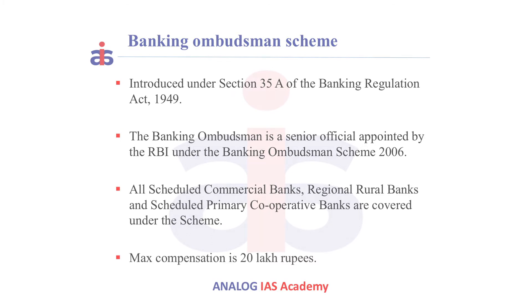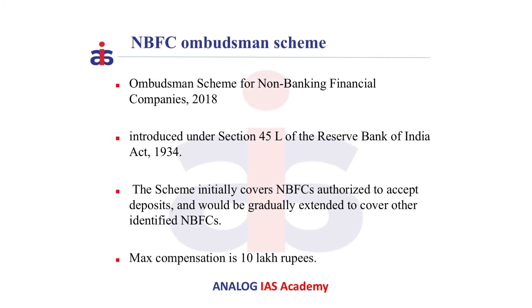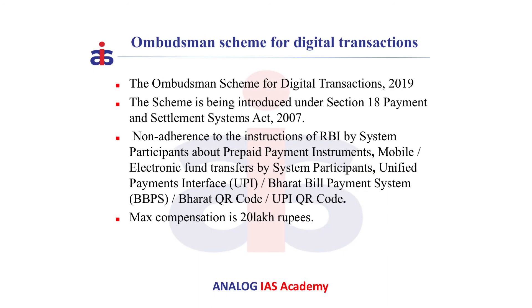Now let us discuss the NBFC Ombudsman Scheme. It is introduced under Section 45L of the RBI Act, 1934. This scheme initially covered NBFCs which are authorized to accept deposits only, but it has gradually been extended to cover other identified NBFCs as well. The maximum compensation under this scheme is 10 lakh rupees.